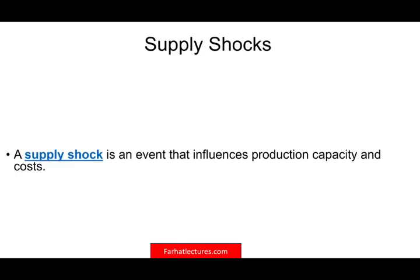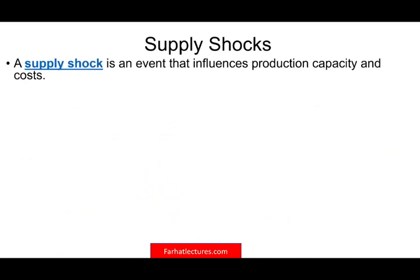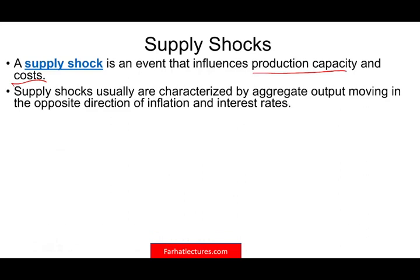Supply shocks — what are they? A supply shock is an event that influences the production capacity and cost of production. They are characterized by aggregate output moving in the opposite direction of inflation and interest rate. Whereas demand shocks move output, inflation, and interest rates in the same direction, supply shocks move them in the opposite direction.